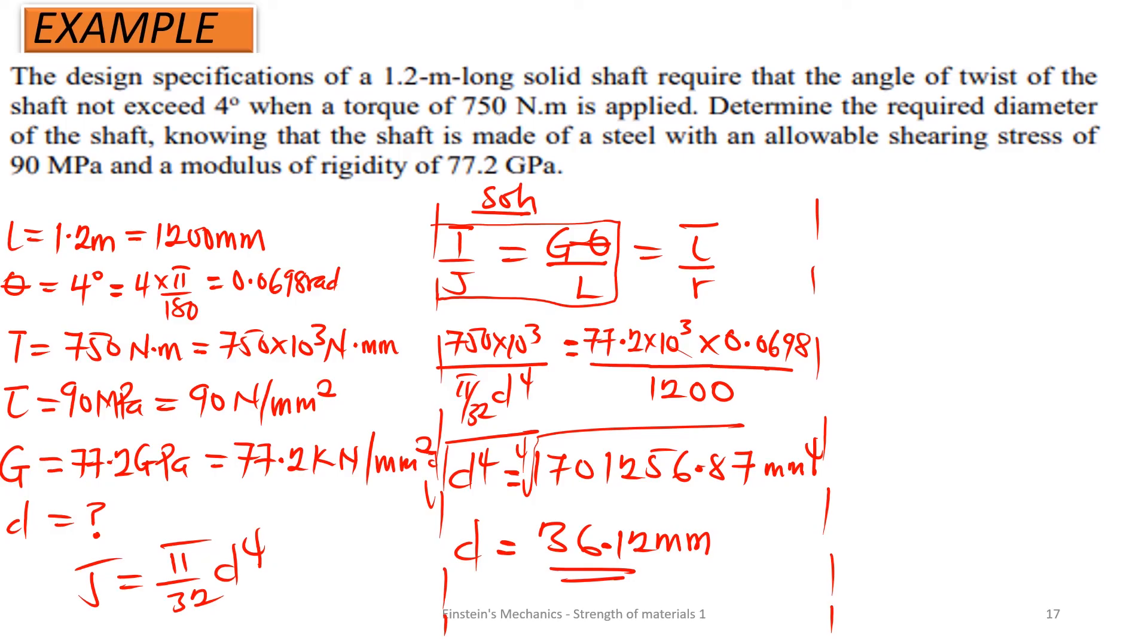If we are to combine T on J with the shear stress on the radius, then we are going to get an expression that says shear is 16T on pi D cubed. We shouldn't forget this expression. Anytime you have that, you can just reduce it to this. So from here, we can make D cubed the subject.